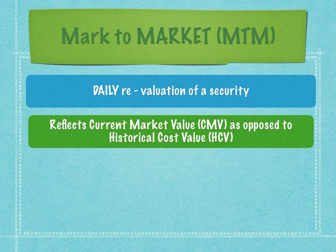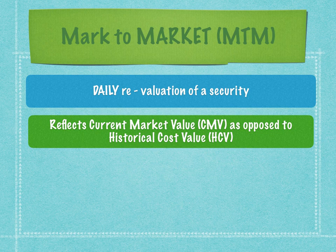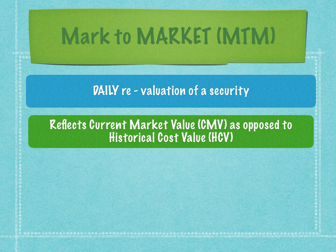It reflects the current market value as opposed to the historical cost value. Trading positions are completely driven by prices, and prices are very volatile — asset prices and instrument prices change every millisecond. Because of this continuous change in prices, the bank's treasury division is exposed to a significant amount of volatility caused by price changes on trading positions.